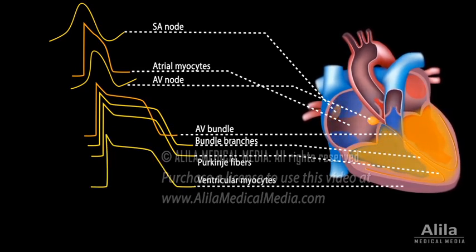Myocytes from different layers of the heart wall — the epicardium, midmyocardium, and endocardium — exhibit different rates of repolarization due to different ratios of ion channels.